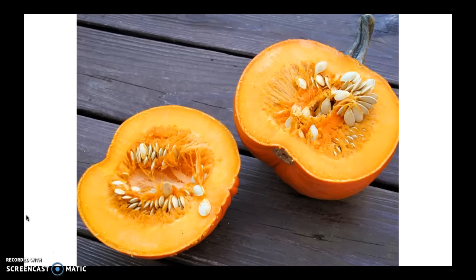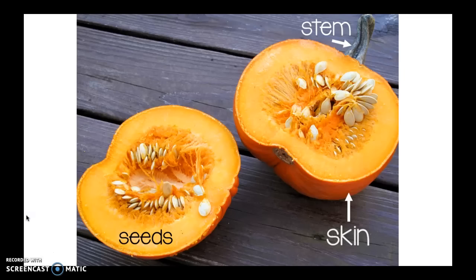Here's the inside of a pumpkin. There's the stem again and the skin, and look — we have seeds. Seeds in a pumpkin are white and they're about the size of your fingernail. Remember when we learned about apples, apples only had five seeds and they were shaped like a star. In a pumpkin there are a lot of seeds.